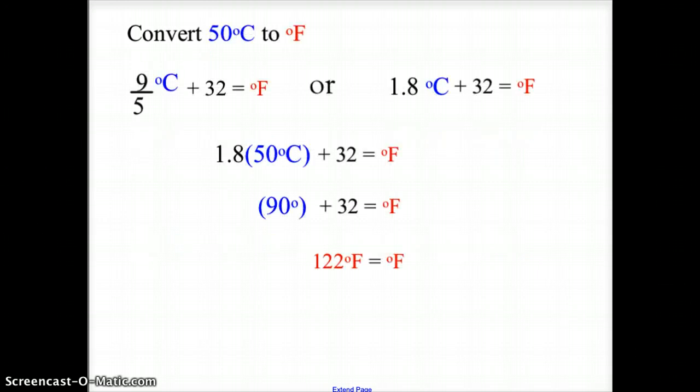Let's look at some examples of this. We're going to convert 50 degrees Celsius to Fahrenheit. We plug those values in, and we get 1.8 times 50 degrees Celsius, which gives us 90. Then we add 32, so our Fahrenheit temperature is 122 degrees Fahrenheit.